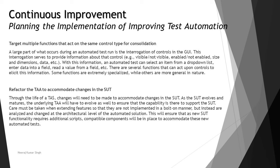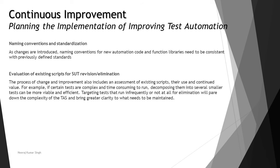In addition, naming conventions and standardizations must be considered when improving test automation. As changes are introduced, naming conventions for new automation code and functional libraries need to be consistent with previously defined standards. Standards must remain the same whether you are creating something new or updating existing code, to avoid conflicts with names used in frameworks or scripts.